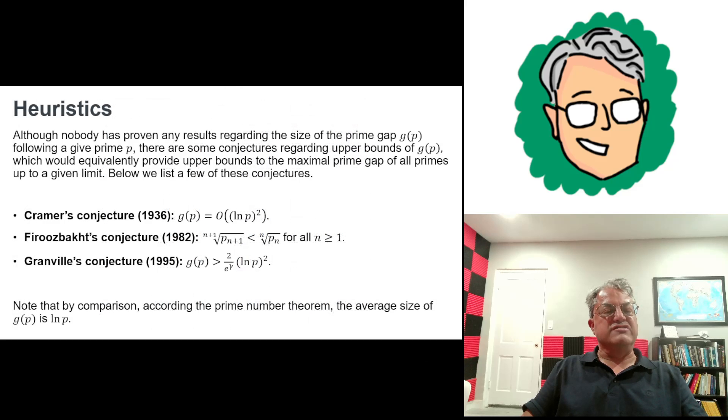And there's some conjectures on the size of the maximal prime gap. There's conjectures about the upper bound of G(P). G(P) is just the prime gap following a prime P. It doesn't have to be maximal. But if you can give an upper bound on G(P), then you've also given an upper bound on the maximal prime gap for primes of size P. And there's three kind of interesting conjectures about it. I think Kramer came up with the first of these conjectures in 1936. He said that G(P) is big O of the natural log of P quantity squared. Big O just means that it's less than or equal to some constant times the natural log of P quantity squared.